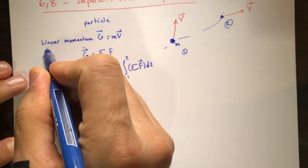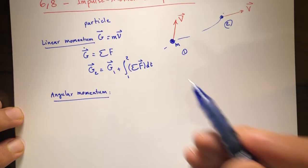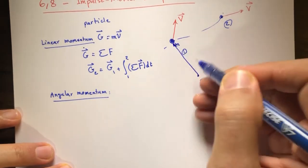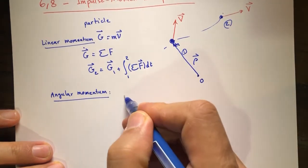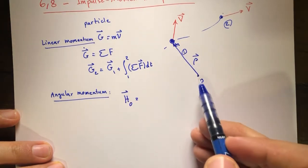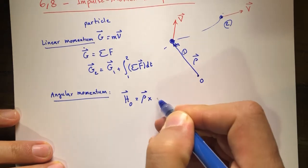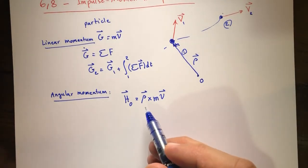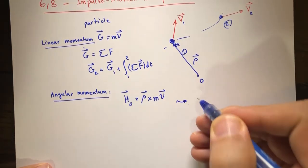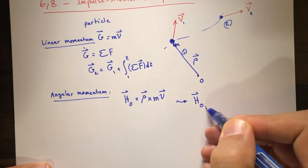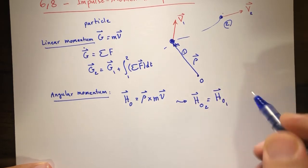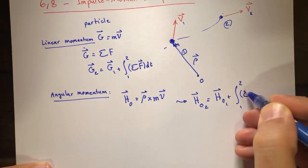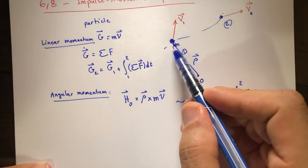We also talked about angular momentum. For a particle about any point O, we defined the angular momentum H_O as rho cross mv. By taking the derivative of this equation and integrating — just as we did for linear momentum — we found H_O2 equals H_O1 plus the integral from one to two of the sum of all moments acting on the particle about point O, dt.